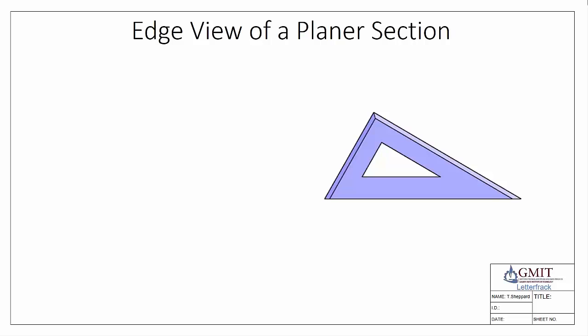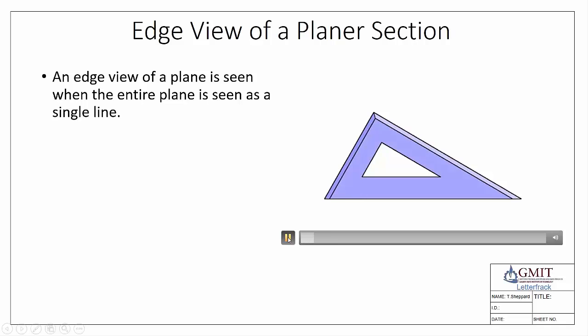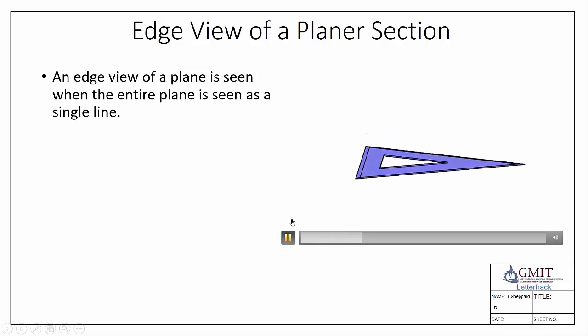A planar section is essentially just a flat object, like the example here of our set squares. A set square is just a flat object, and the edge view of a plane is seen when the entire plane is seen as a single line or edge. So if we take our object like so, there's always a position where we can tilt it around so that the entire object is seen as an edge — there is the entire object seen as an edge view or as a single line.